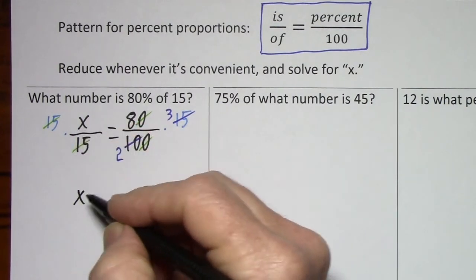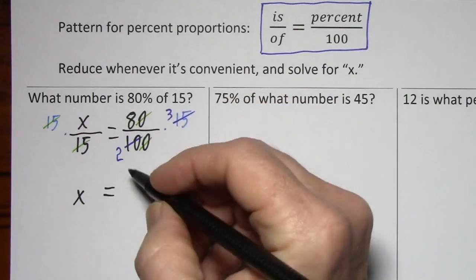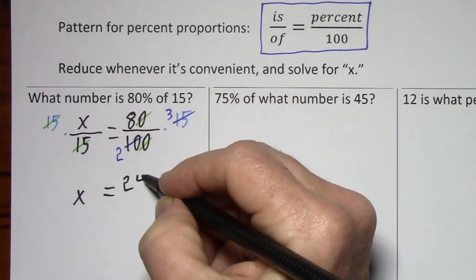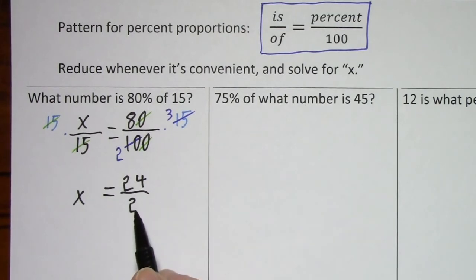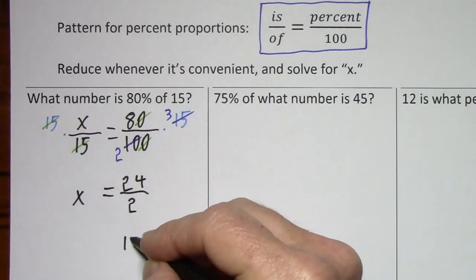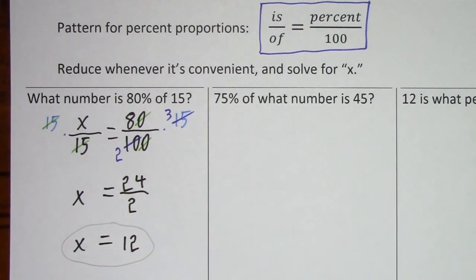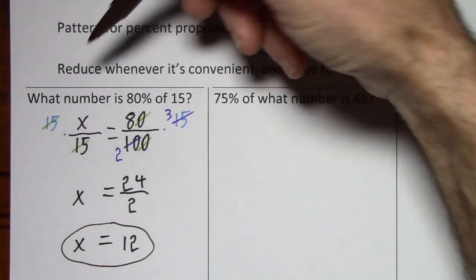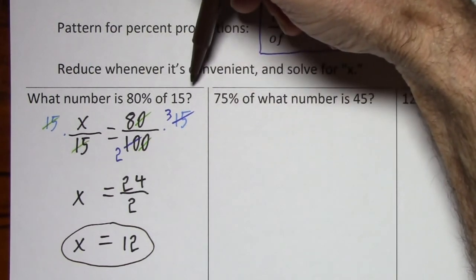So let's just see what we've got now. This is X. Bring down your equal sign. 8 times 3 is 24. And 2 is in the denominator. So this is what's left standing and we can reduce this very quickly. 24 divided by 2 is 12. So bring down your X and your equal sign. What this means is 12 is 80% of 15.